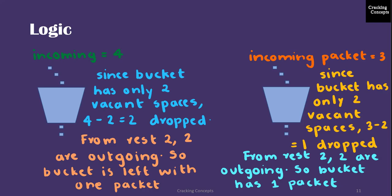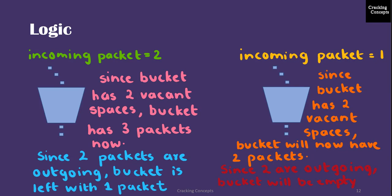Now the third packet incoming is 3. Bucket already has 1 packet and there are 2 vacant spaces. So 3 minus 2, 1 packet needs to be dropped. Bucket status again is 3. From that we know that the outgoing rate is 2. So 3 minus 2, therefore 1 packet will be left in the bucket.